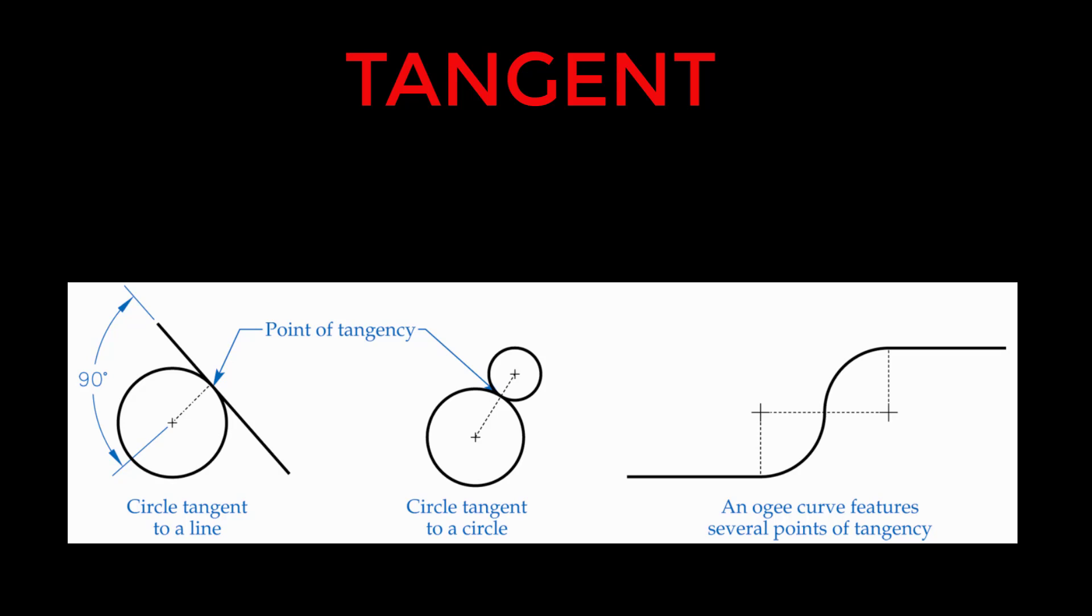For a line and circle, the point of tangency is always found at the end of a line drawn perpendicular to the line from the center point of the arc or circle. Circles and radii can be tangent to each other. It just means that two circles are only sharing one point.